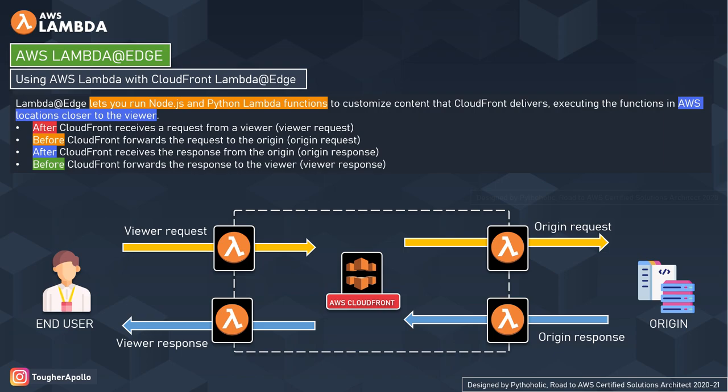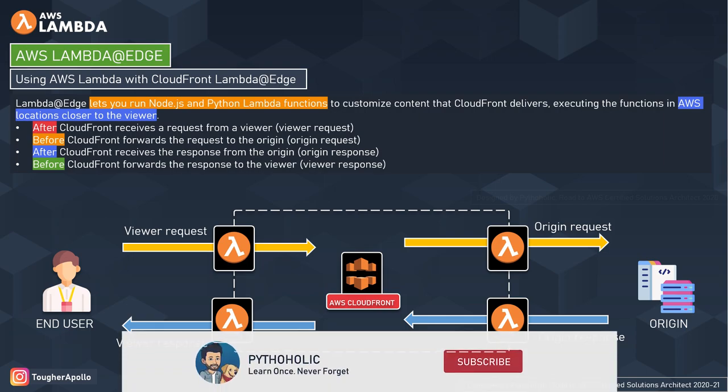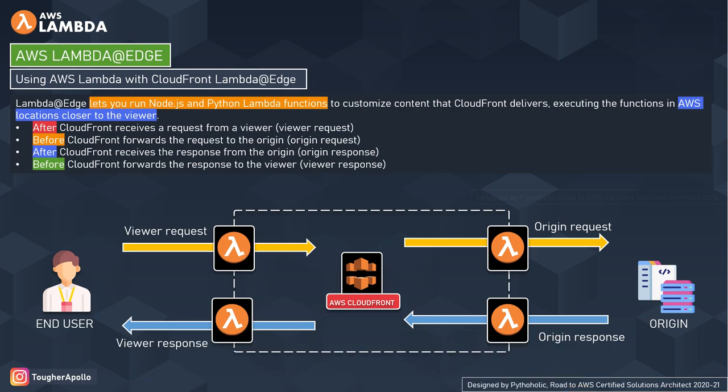The viewer response function does not execute in the following cases: when the origin returns an HTTP status code of 400 or higher, when a custom error page is returned, when the response is generated from a function triggered by a viewer request event, or when CloudFront automatically redirects an HTTP request to HTTPS — specifically when the viewer protocol policy is set to redirect from HTTP to HTTPS. You can use the same Lambda function with multiple CloudFront distributions, and CloudFront does wait for an event to complete before making another trigger.